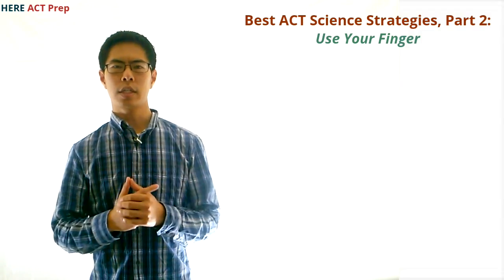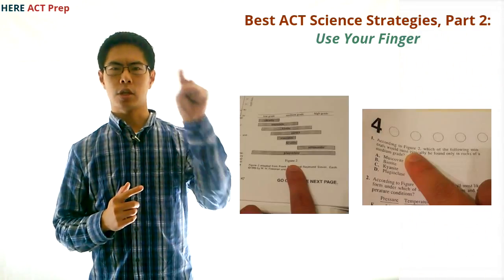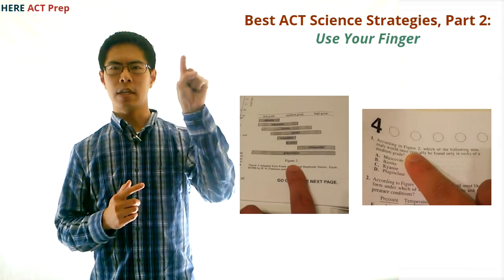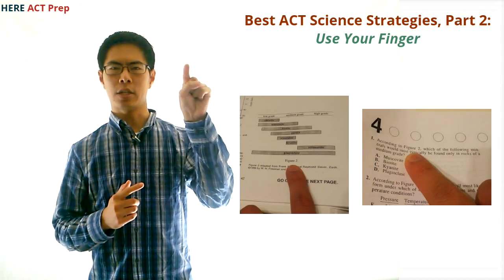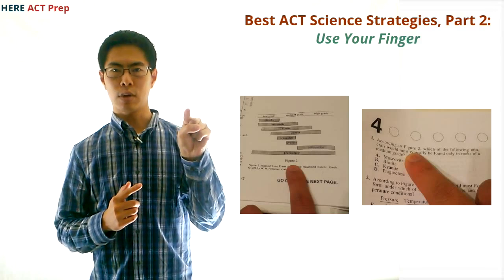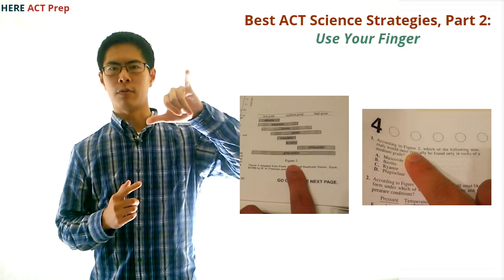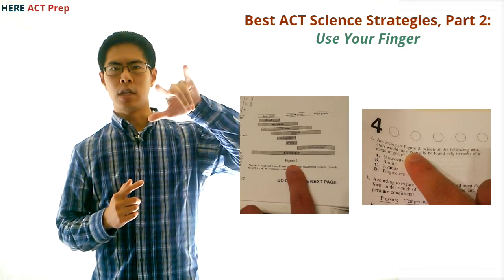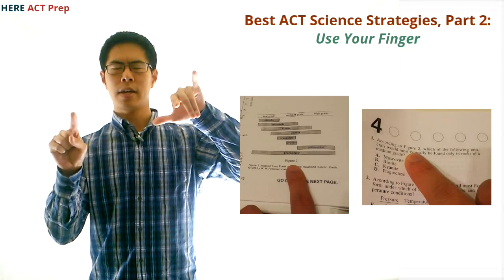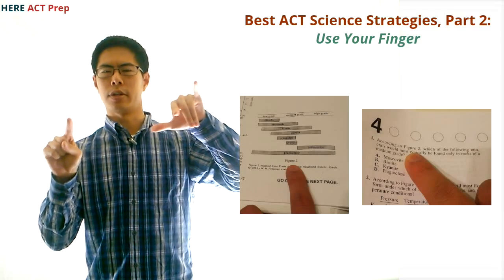When you read each question, the first thing you should do is immediately look for which chart, table, or trial you need to refer to and put your left index finger by that chart, table, or trial. If the question refers to more than one, use two or more of your fingers to keep track of which ones you need to focus on. While you do this, keep your right index finger at the question so you won't waste time trying to find the question you were originally at.